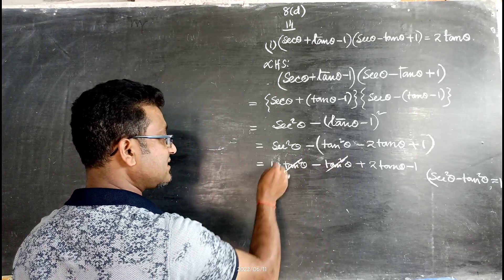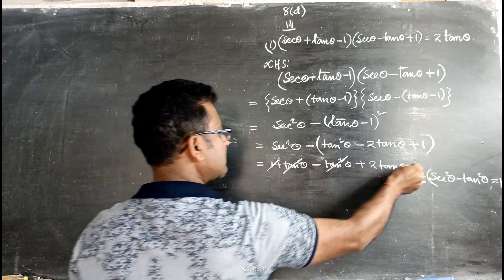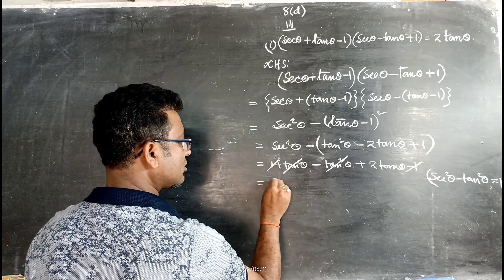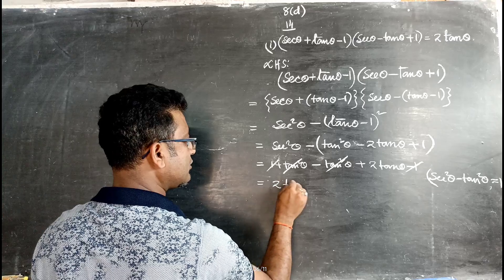The tan²θ terms cancel and the +1 and -1 cancel, leaving us with 2tanθ, which is the required right hand side.